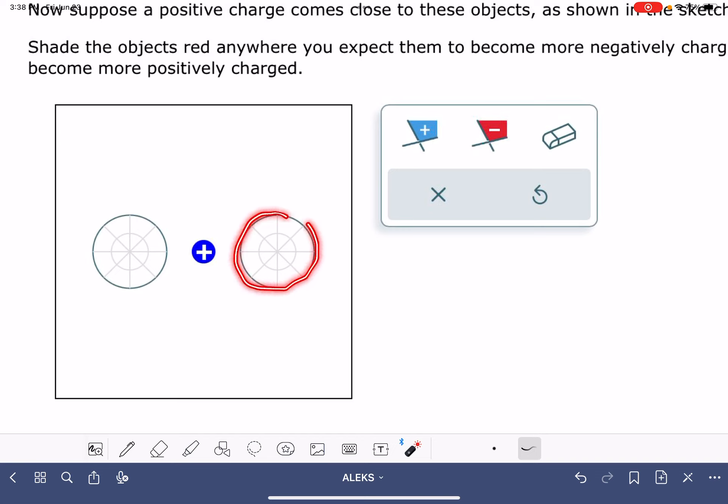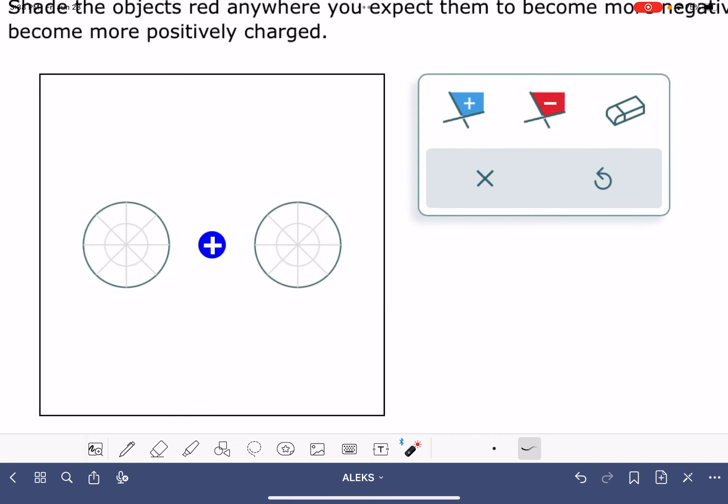Then you're going to have at least one object. I've got two objects here. Usually there's spheres, but I've seen other shapes as well. It could be a variety of things.